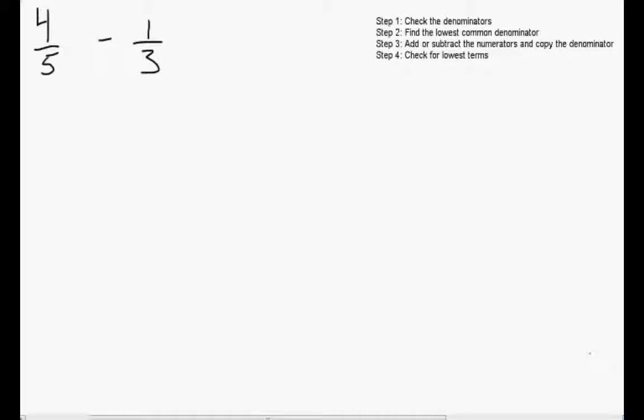Let's take a look at this example. Here we have 4 over 5 subtract 1 over 3. I've included our method here in the corner so we can reference it. The first step is to check whether the denominators are equal. Here we have 5 and 3, so they are not equal. So we're going to go to step 2, which is finding the lowest common denominator.